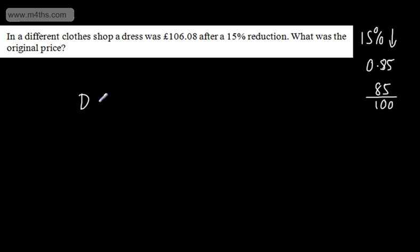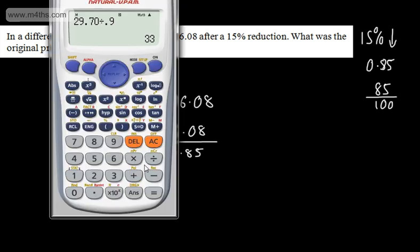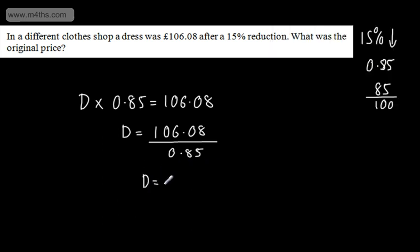So all I'm going to do is write that the dress multiplied by 0.85, so this is the original price, gave me £106.08. So I can simply write now that the dress originally was £106.08 divided by 0.85. You don't have to write this out as such. We can simply put now that the dress is going to be £106.08 divided by 0.85. It's a 15% reduction. So if you want to put it as a fraction, we can put it as a fraction, £106.08 divided by 0.85. And that's going to give me now £124.80. So we can say that the dress was going to be £124.80.